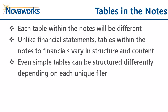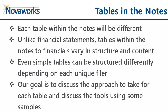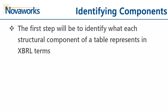Even a simple table, like a PP&E table, can be structured differently depending on each unique filer. So the goal of this tutorial is to discuss the approach to take for certain kinds of tables and discuss the tools that we would use for a few samples. We'll have more practical examples in another tutorial. To start, the first step in tagging a table will be to identify what each structural component of the table represents in XBRL terms.